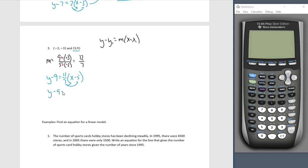Now we'll distribute the 12 sevenths. y minus 9 equals 12 sevenths x minus. Remember this 5 is over 1. Anytime you're not sure what's going on, to make a fraction, we always put it over 1. To multiply fractions, we multiply straight across. So 12 times 5 is 60. 7 times 1 is 7.